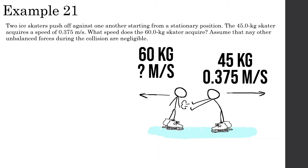So let's look at this. Two ice skaters push off against one another, starting from a stationary position. The 45kg skater acquires a speed of 0.375 meters per second. What speed does the 60kg skater acquire? Assume that any other unbiased forces during the collision are negligible.